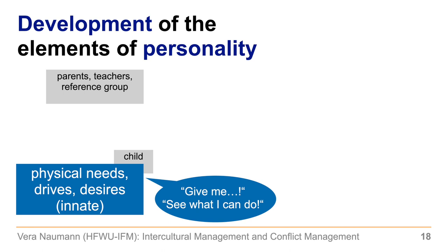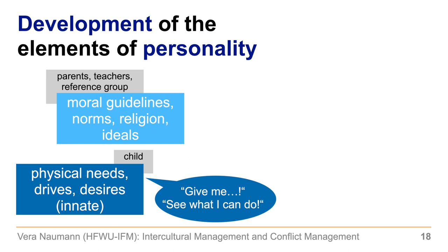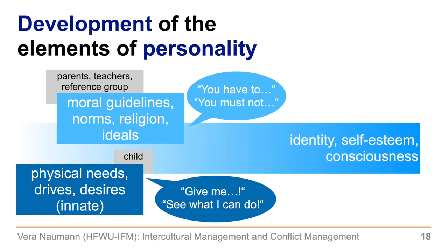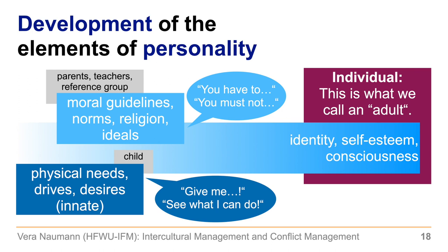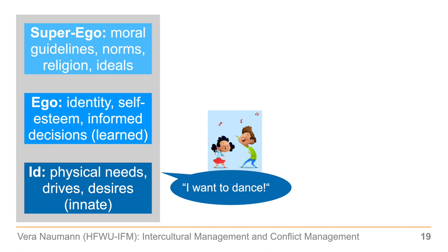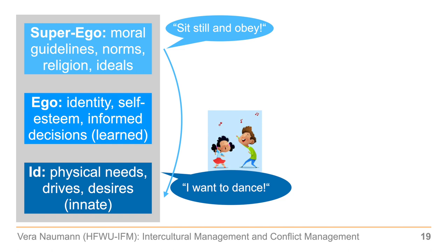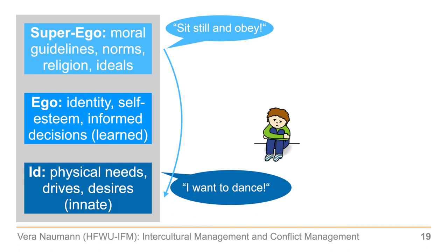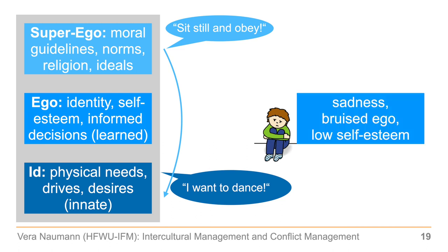Children learn from parents, teachers, and their reference group: moral guidelines, norms, religion, ideals — you have to do this, you must not do that. Over time this shapes an identity, a certain self-esteem, a consciousness — that is what we call an individual, what we call an adult. So we have a personality consisting of superego, ego, and id. For example: I want to dance. You listen to music and without much thinking you move your body. But if the superego kicks in and your parents say sit still and obey, you don't feel good — you have a bruised ego and low self-esteem.